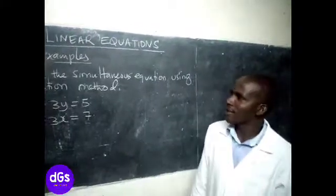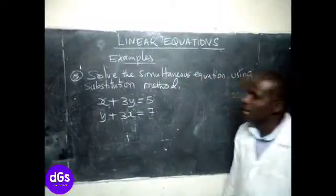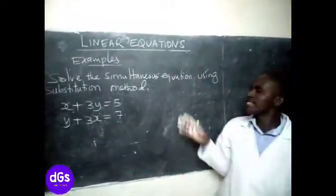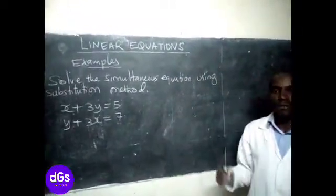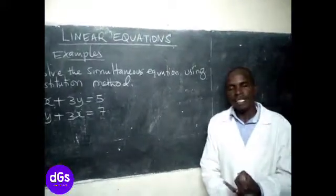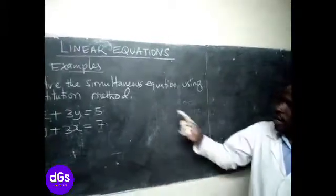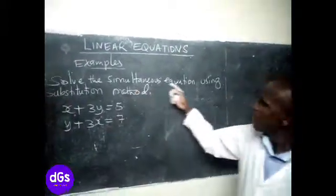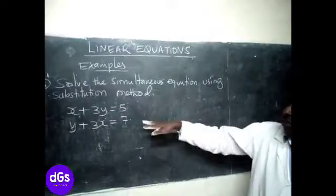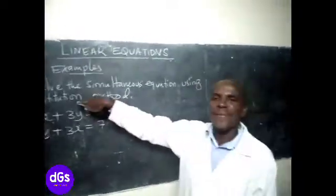This second problem should be number five, example number five, and it requires us to use the second method of solving simultaneous equations. There is elimination method, and now there is substitution method. And it says solve the simultaneous equation using substitution method.